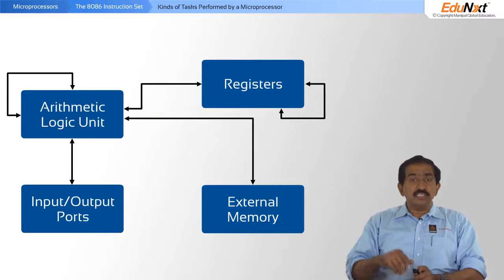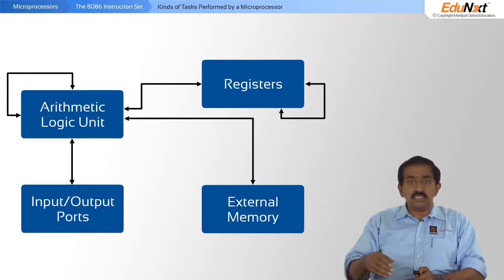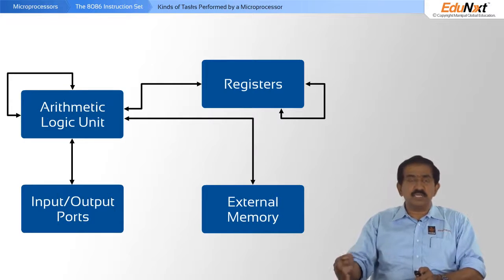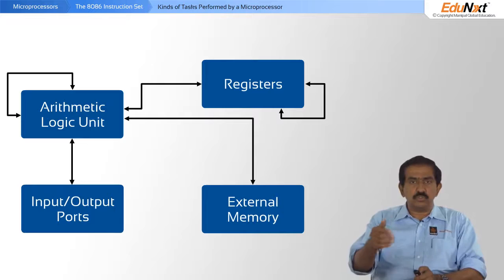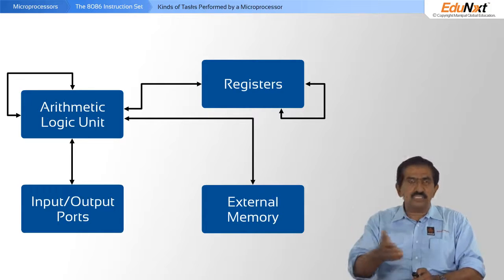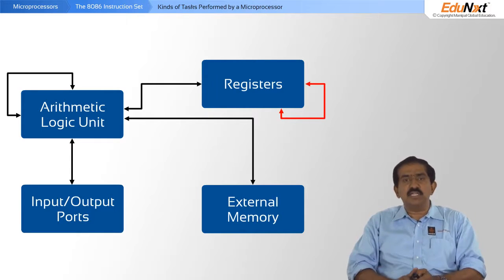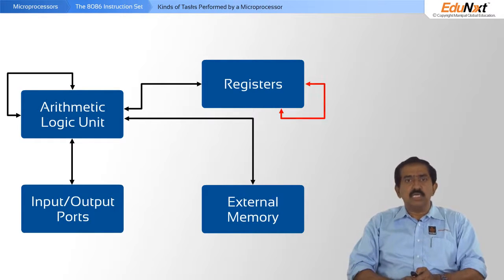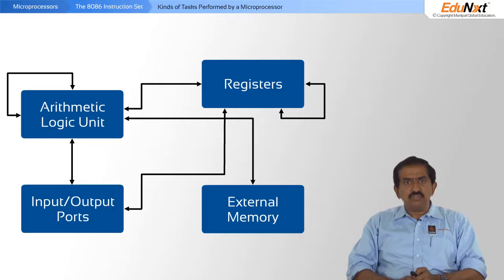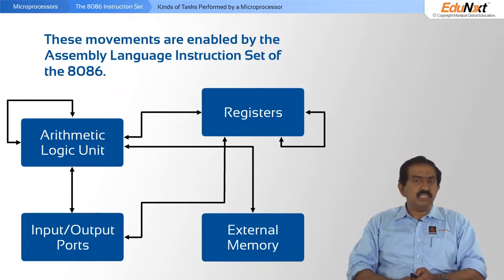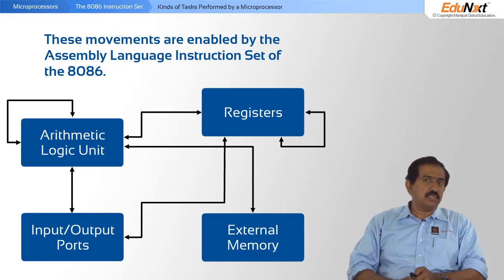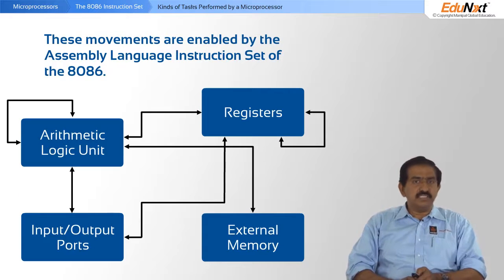On top of that, the registers can talk to each other — AX can move to BX, BX can move to CX, and so on. So there is data movement amongst the registers themselves. All of these kinds of movements are enabled by the instruction set of the 8086.